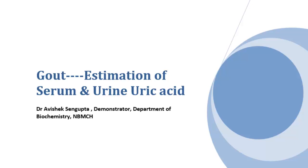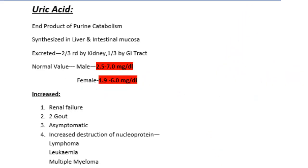Good morning students. Today's topic is estimation of uric acid. Uric acid is the end product of purine catabolism. It is mainly synthesized in liver and intestinal mucosa.